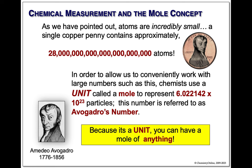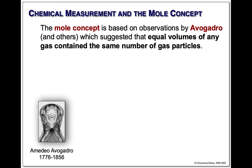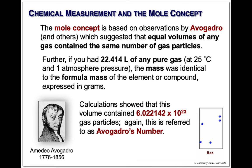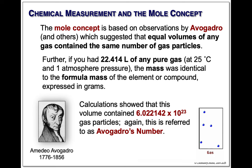Because a mole is just a unit, you could have a mole of absolutely anything — a mole of atoms, a mole of molecules, a mole of pigs, whatever. It's just a unit. This was based on observations that Avogadro and others made suggesting that equal volumes of any gas contain the same number of gas particles, no matter what gas it was. That's really surprising intuitively, but it has to do with the fact that gases travel so quickly and there's so much space in between them.